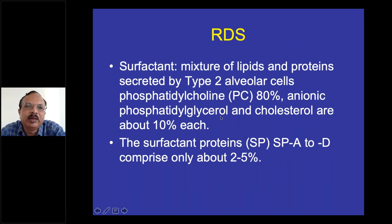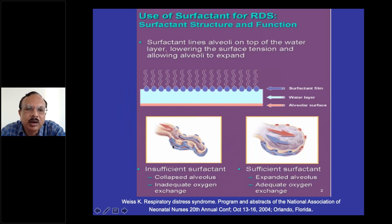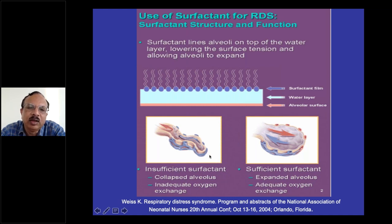Surfactant is a mixture of lipids and protein secreted by type 2 alveolar cells. Phosphatidylcholine is 80% of this, and anionic phosphatidylglycerol and cholesterol are 10% each. If there is a surfactant membrane lining the alveolus, the alveolus maintains full expansion and doesn't allow the alveolus to collapse on its own. So there is gas exchange taking place in a healthy way on the right side compared to the left side, where there is collapse of the alveolus due to deficiency of surfactant.